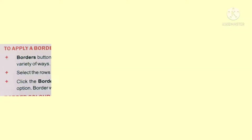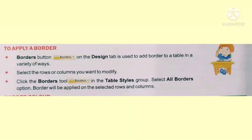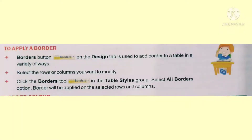The border button on the design tab is used to add borders to the table. Select the row or column on which you want to apply the border, then go to the table style group and click the border tool. Select the all borders option, and the border will be applied on the selected row and column.